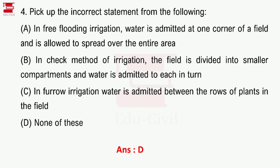In the check method of irrigation, fields are divided into smaller compartments and water is admitted in each. In furrow irrigation, water is admitted between rows of plants. In furrow method there is a ridge and furrow arrangement. Option D is none of these.